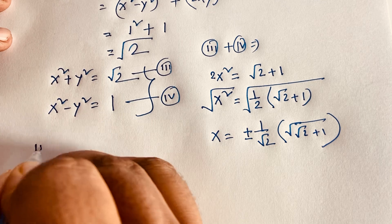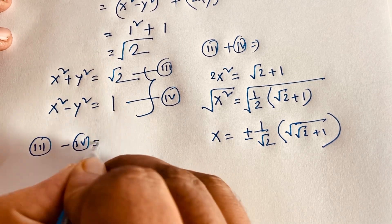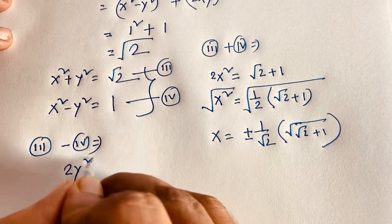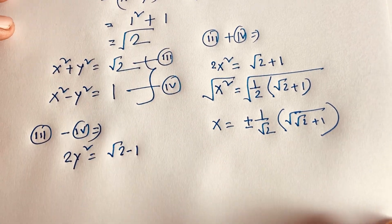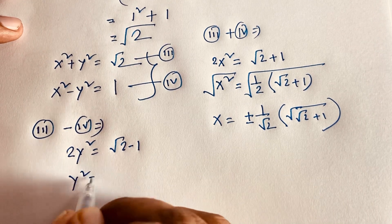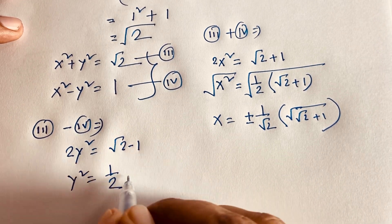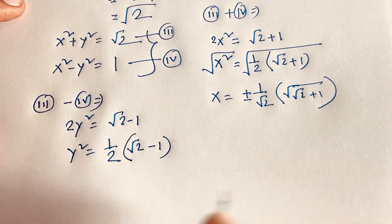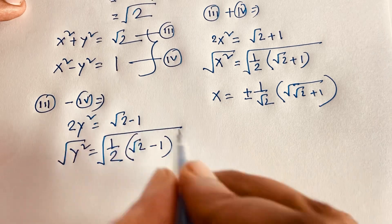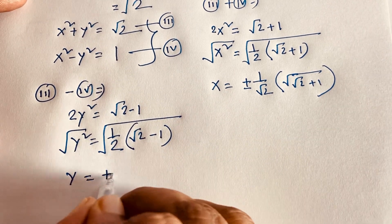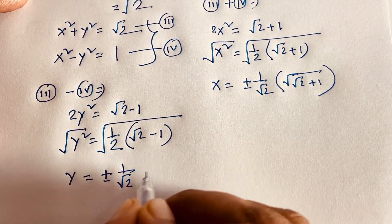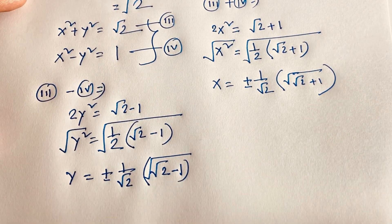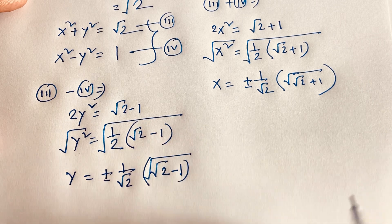Subtracting the third and fourth equations: 2y² equals √2 minus 1. Then y² equals (√2 minus 1) over 2. Taking square roots: y equals plus or minus 1 over √2 times √(√2 minus 1).